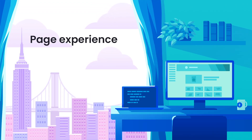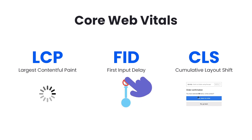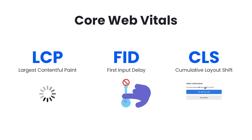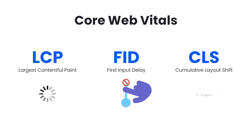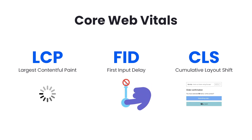When we say page experience, what do we mean? At the center of page experience is a concept called Core Web Vitals. Core Web Vitals is simply three metrics measured from real-world user data drawn from the Chrome User Experience report. There's Largest Contentful Paint to measure how quickly content appears on the screen, First Input Delay for the time between when elements display and when they're ready for user interactions, and finally Cumulative Layout Shift, which measures how much page elements move around during page load, potentially distracting the user.